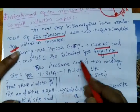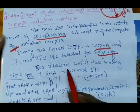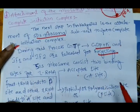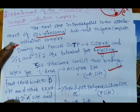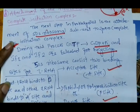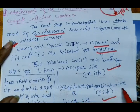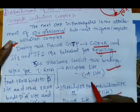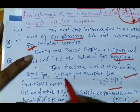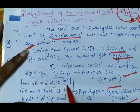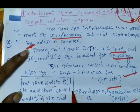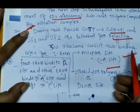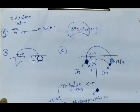The 50S ribosomal subunit has two binding sites for tRNA: the acceptor site (A site) and the donor site, also called the peptidyl or polymerization site (P site). The formyl-methionine tRNA binds first to the P site, and other incoming tRNAs bind to the A site and then shift to the P site.